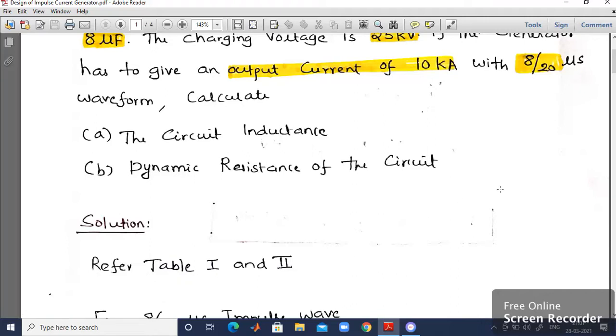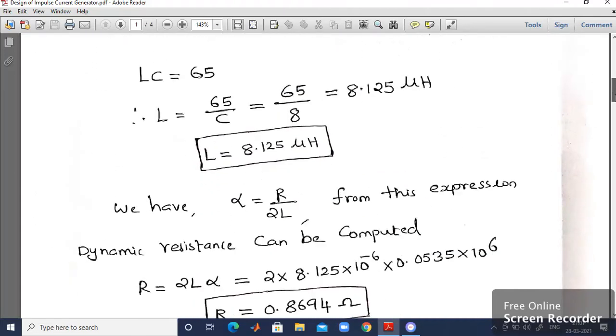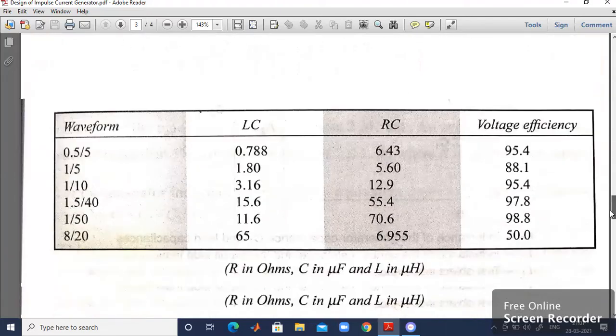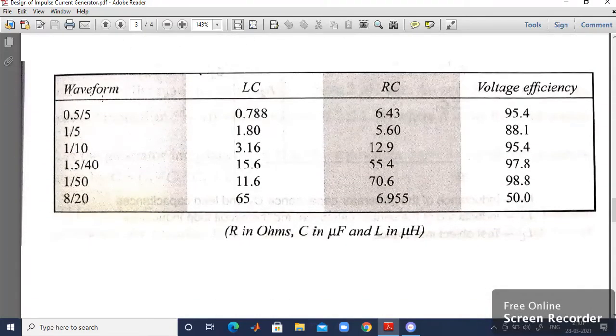Afterwards you have to refer table 1 and table 2. Let me show you what are the parameters which are given in table 1 and table 2 first. In table 1, you can see different waveforms and you can observe LC and RC value and also the voltage efficiency. It is same that of impulse voltage generator. Same table can be used for impulse voltage generator also.